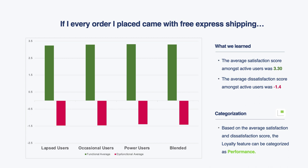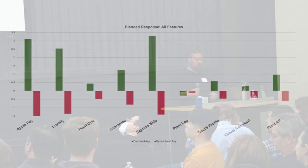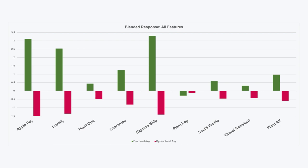These are just two hypothetical examples, but you can see if you're testing eight, nine, ten features you can start to see how they stack up. Running that same question pair for a bunch of different features — Apple Pay, loyalty, plant quiz, money-back guarantee, express shipping, personal plant log, social profile, virtual assistant, plant AR visualization — you can see where you've got some pretty dramatic swings and separation between features.